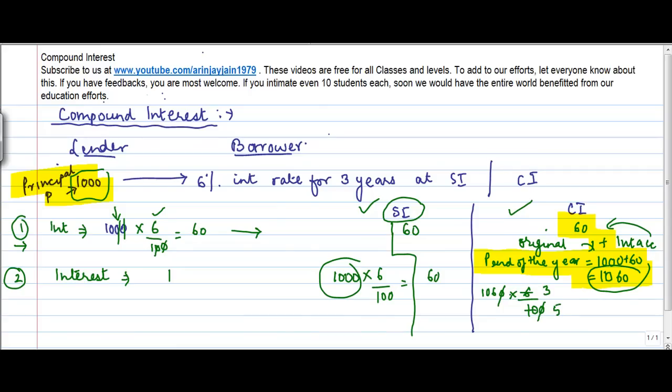This comes to 318 divided by 5, which is 63.6. So have you noticed the difference? The difference lies in the fact that whereas the interest in case of simple interest for year two was 60, for compound interest it was 63.6.